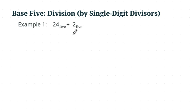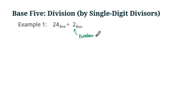Let's take a look at this example: this is 24 base 5 divided by 2 base 5. If you look at the divisor first, that's a single-digit divisor, and the way we handle this situation is that we are going to form two groups — meaning you separate two longs and four units into two groups and try to do it evenly. The divisor tells you how many groups you are going to form.